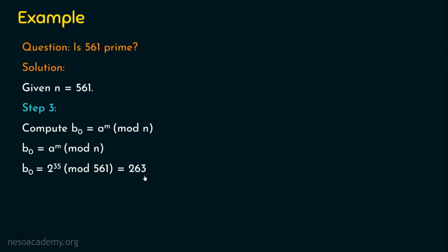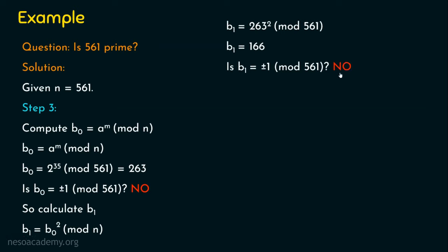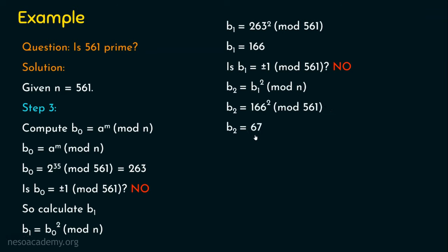Is b0 either plus 1 or minus 1? No. Since b0 equals 263, which is neither plus 1 nor minus 1, we proceed to compute b1. b1 equals b0 squared mod n, which is 263 squared mod 561. Evaluating this gives b1 equals 166. Is b1 either plus 1 or minus 1? No, so we compute b2.